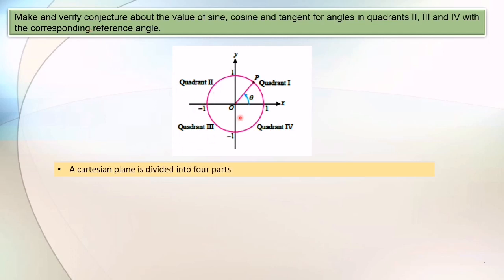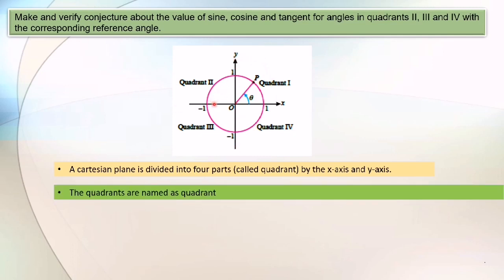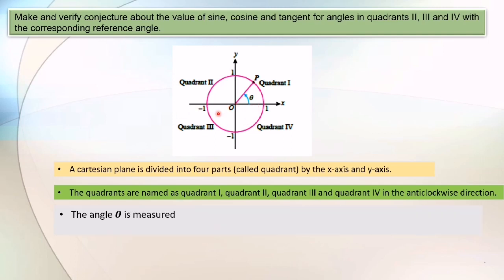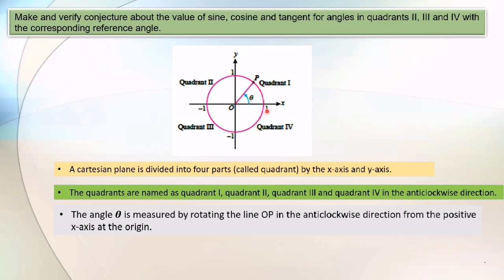The Cartesian plane is divided into four parts called quadrants by the x-axis and y-axis. The quadrants are named quadrant 1, quadrant 2, quadrant 3 and quadrant 4. The angle theta is measured by rotating the line OP in the anti-clockwise direction from the positive x-axis at the origin.